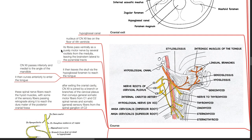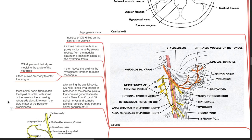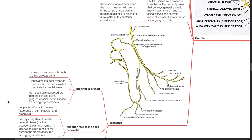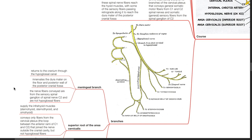Cranial nerve 12 passes inferiorly and medial to the angle of the mandible, then curves anteriorly to enter the tongue. After exiting the cranial cavity, cranial nerve 12 is joined by branches of the cervical plexus that convey general somatic motor fibers from C1 and C2 spinal nerves and somatic general sensory fibers from the spinal ganglion of C2. These spinal nerve fibers reach the hyoid muscles, with some sensory fibers passing retrograde along it to reach the dura mater of the posterior cranial fossa. Branches include the meningeal branch, the superior root of the ansa cervicalis, and the lingual branches.